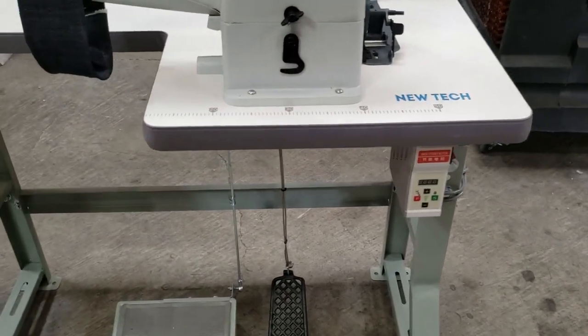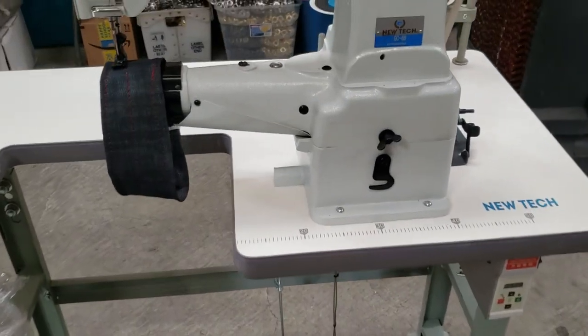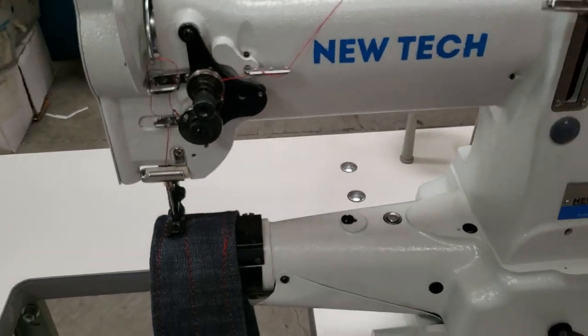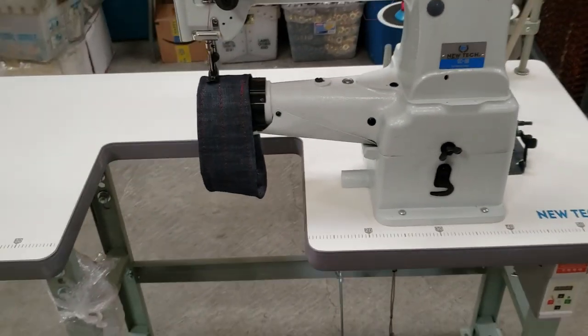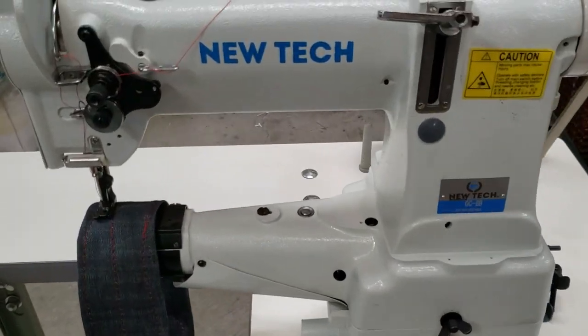And a control panel, auto reverse, and you can add bobbin winder and the needle positioning. Call us at 1-800-868-4419 or go to goldstartool.com. Thank you for watching and have a wonderful day.